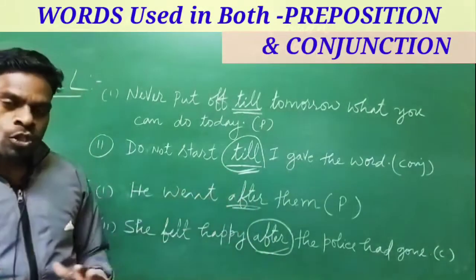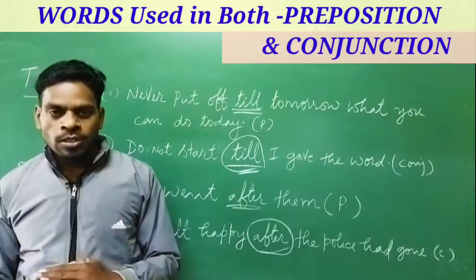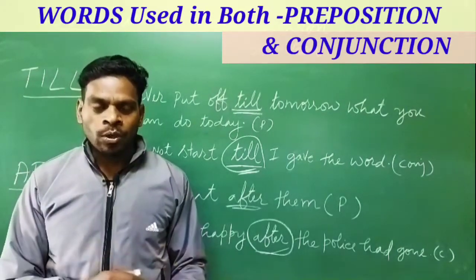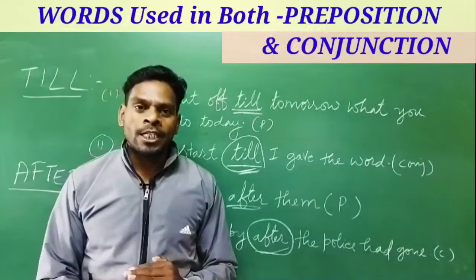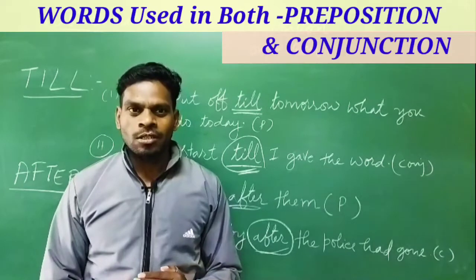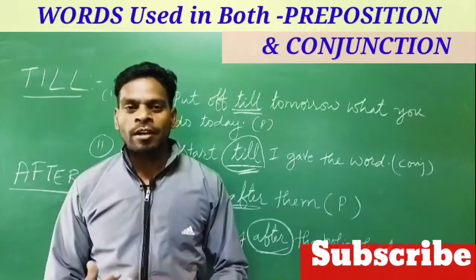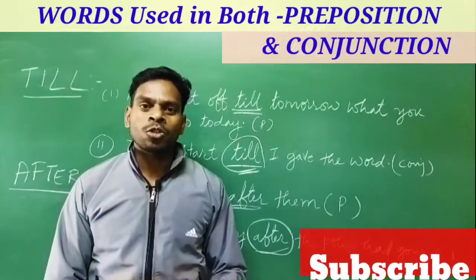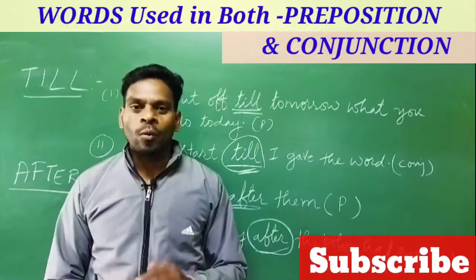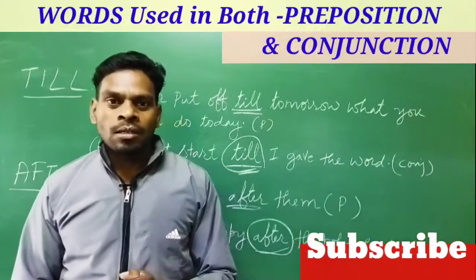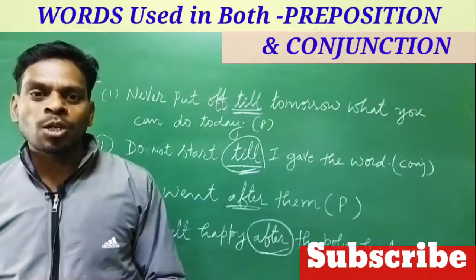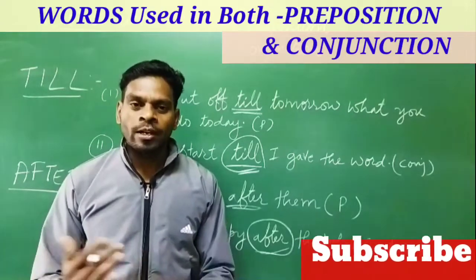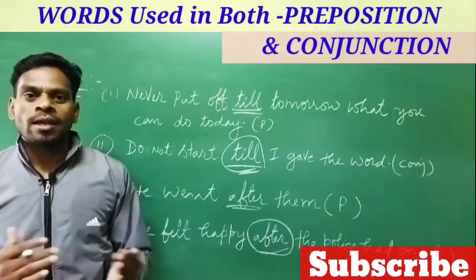So these are some of the words that are used in both preposition and conjunction — that's why we are often confused about their usage. Remember: prepositions are used before a noun or pronoun and indicate time, place, direction, and so on. Whereas conjunctions are connecting words that join two sentences, group of words, phrases, or clauses. That way you can distinguish between prepositions and conjunctions.